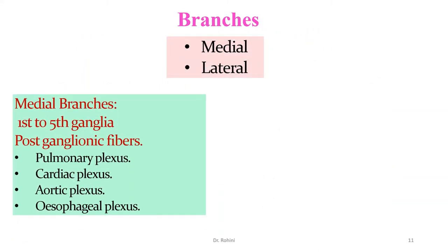The branches of the thoracic sympathetic chain fall into two groups: medial and lateral. The lateral branches are the rami communicantes. The medial branches from the first to fifth ganglia carry postganglionic fibers that contribute to plexuses around neighboring structures — the pulmonary plexus for the lungs, the cardiac plexus for the heart, the aortic plexus around the aorta, and the esophageal plexus. These form the sympathetic component of those plexuses, together with parasympathetic fibers such as the vagus nerve.